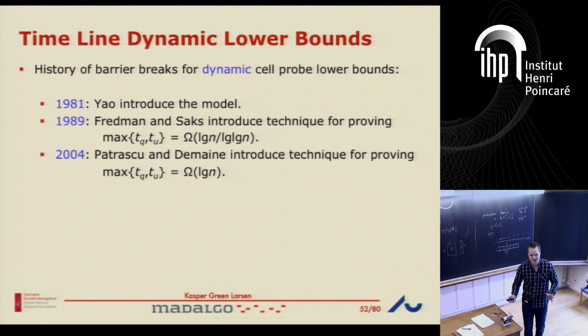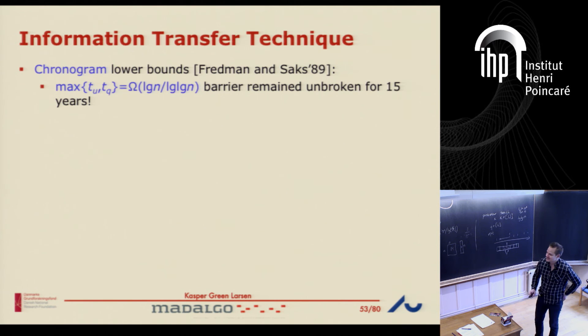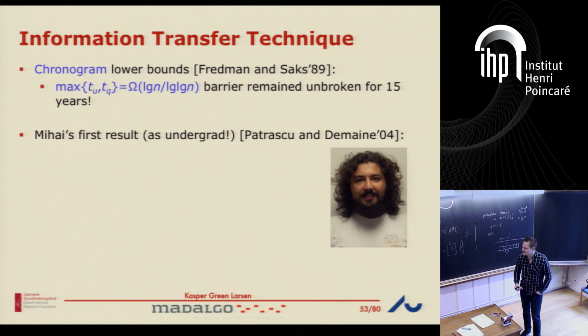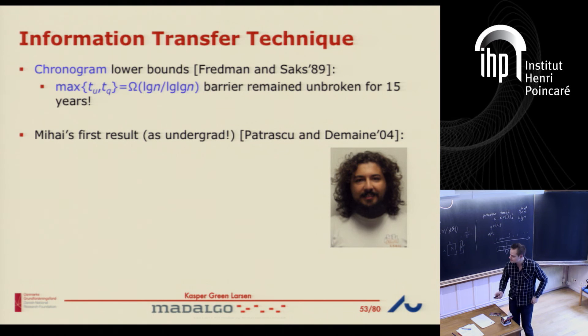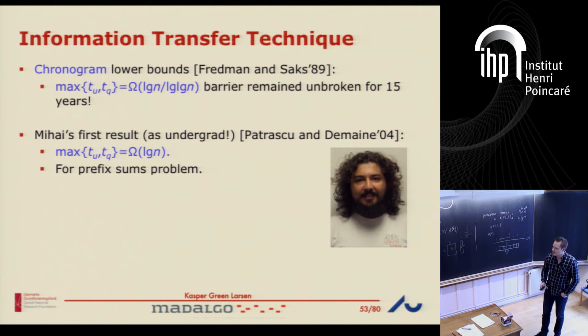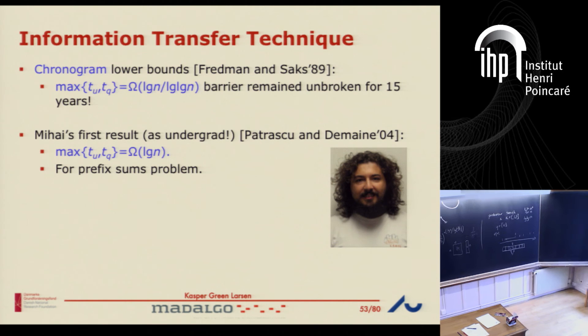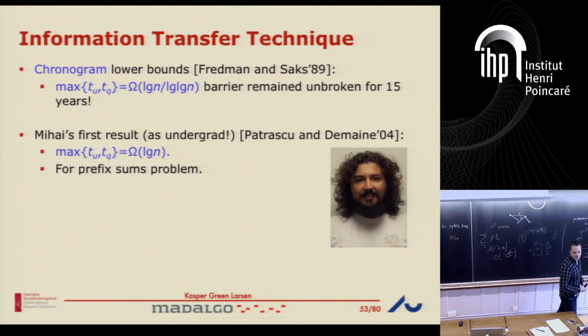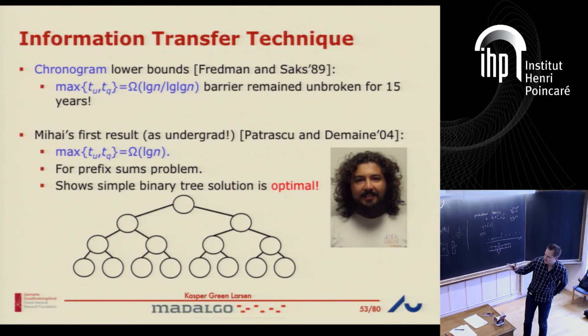Mihai Patrascu — you probably saw his name already if you don't know him — was a very strong PhD student who sadly passed away way too young. His first result as an undergrad proved this log n lower bound after 15 years of no progress. You can also notice he's the non-alphabetic first author on this paper, which is uncommon for TCS papers. His lower bound shows that the binary tree solution is optimal. He also proved lower bounds for all trade-offs between query time and update time that are also tight.